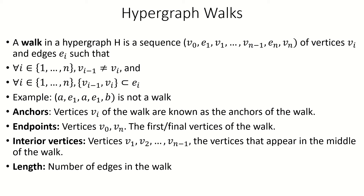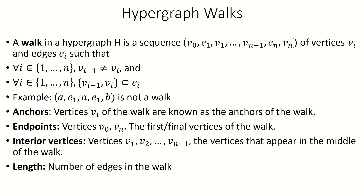Like in graph theory, the length of a walk is the number of edges appearing in its sequence. Also like in graph theory, if the last vertex of a walk is the same vertex as the first vertex of the walk, we say the walk is closed. If not, we say it's open.